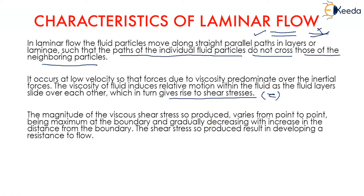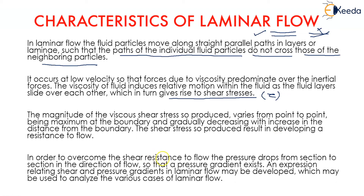The magnitude of shear stress so produced varies from point to point, being maximum at the boundary and gradually decreasing with increase in distance from the boundary. The shear stress produced results in developing a resistance to flow. In order to overcome this resistance, pressure drops from section to section in the direction of flow, so that a pressure gradient exists.